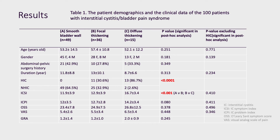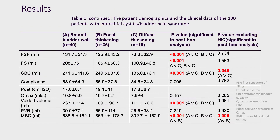Among all symptom scales, only ICSI showed a trend to significantly increase from smooth bladder wall to focal and to diffuse thickening. The difference in objective urodynamic parameters was more significant among patients, including first sensation of filling, strong sensation, cystoscopic bladder capacity (CBC), and voided volume. Patients with diffuse bladder wall thickening had the smallest CBC and voided volume.